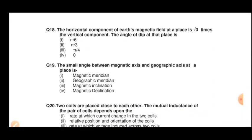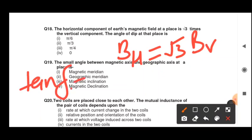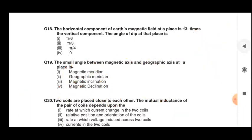Question number 18: the horizontal component of Earth's magnetic field at a place is root 3 times the vertical component. So if the horizontal component is Vh, it is given as root 3 times the vertical component Vv. The angle of dip at that place will be found using tan delta = Vv upon Vh, which gives 1 by root 3. We know 1 by root 3 is tan 30 degrees, so the angle of dip is 30 degrees.